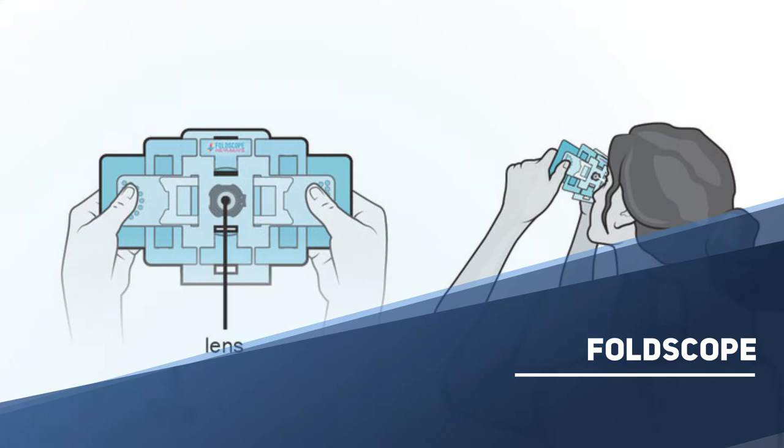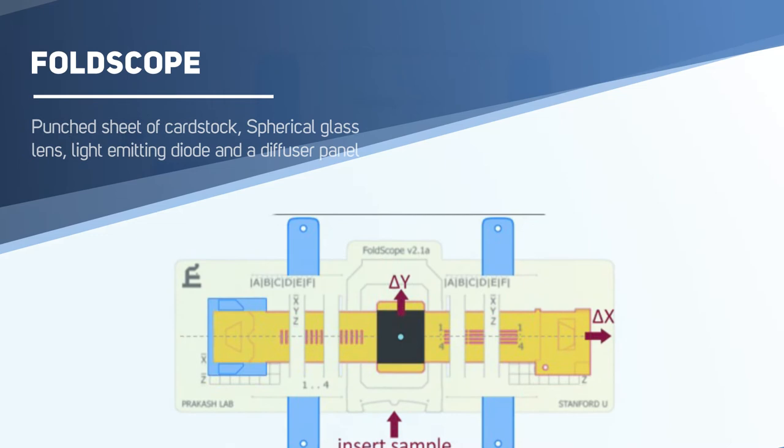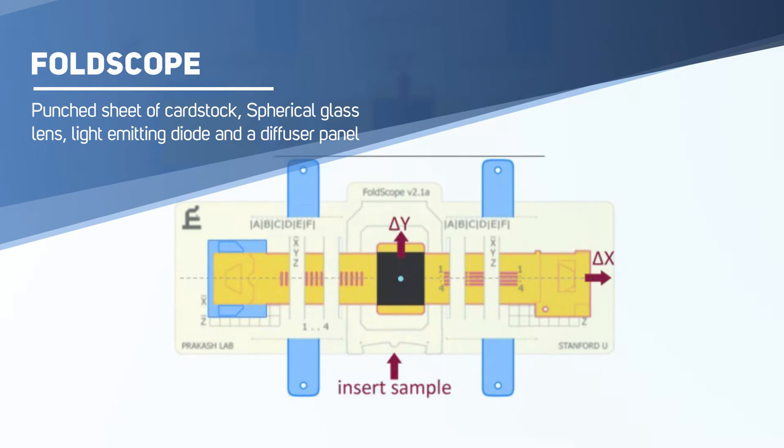This led to the development of Foldscope in 2014. A Foldscope is an optical microscope that can be assembled from a punched sheet of cardstock, a spherical glass lens, a light emitting diode and a diffuser panel along with a watch battery that powers the LED.